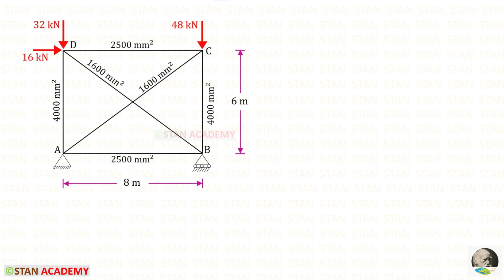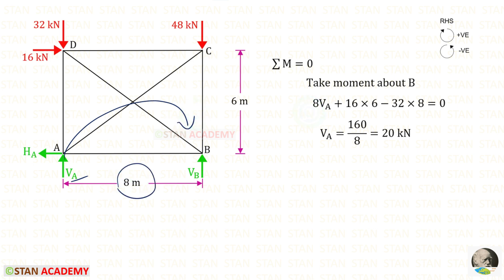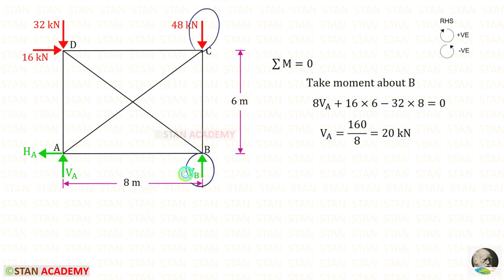First, we have to find the reactions. The hinged support has two reactions and the roller support has only one vertical reaction. I am going to find the vertical reaction VA by taking moment about B, keeping clockwise as positive and anticlockwise as negative. VA gives a clockwise moment with distance 8, the horizontal load of 16 kN acts clockwise with distance 6, and the vertical load of 32 kN acts anticlockwise. For VA, we will get 20 kN.